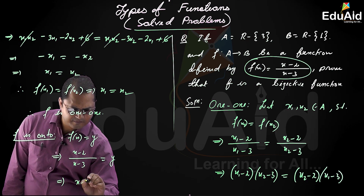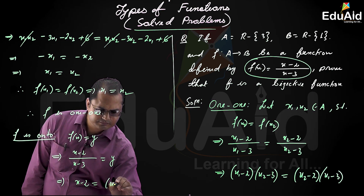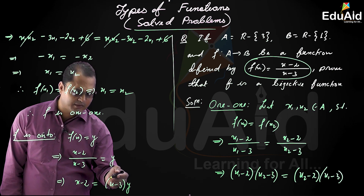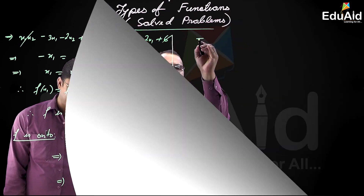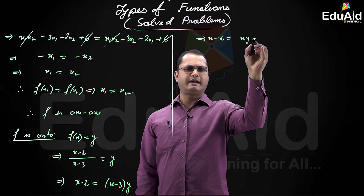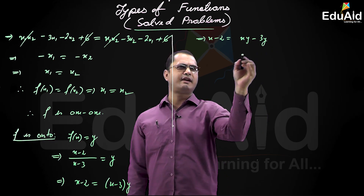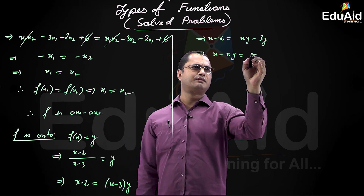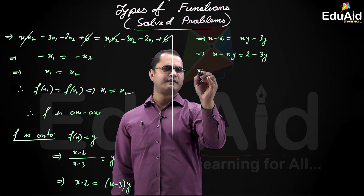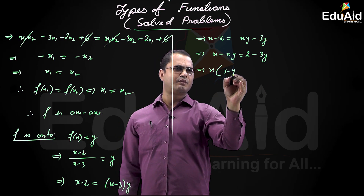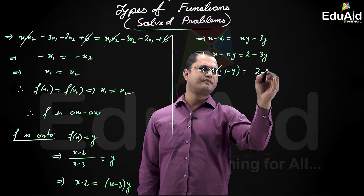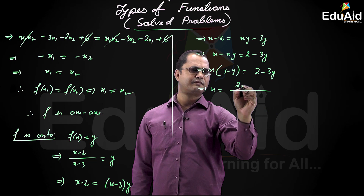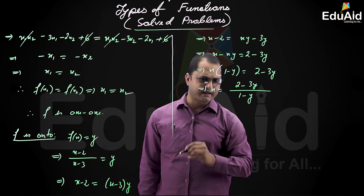Cross multiplying: x minus 2 equals (x minus 3) into y. We want to find x in terms of y. This implies x minus 2 equals xy minus 3y. Rearranging: x minus xy equals 2 minus 3y. Taking x common: x(1 minus y) equals 2 minus 3y. Therefore x equals (2 minus 3y) divided by (1 minus y).